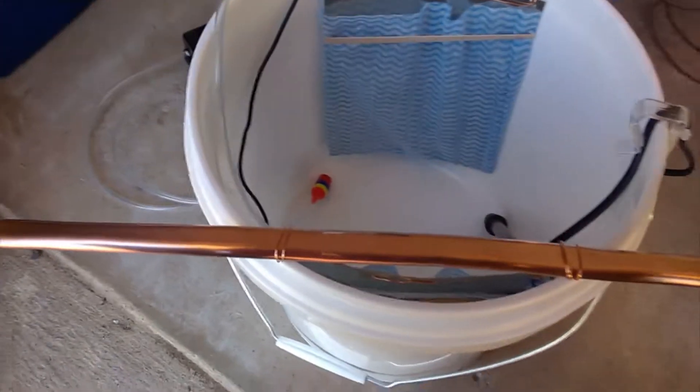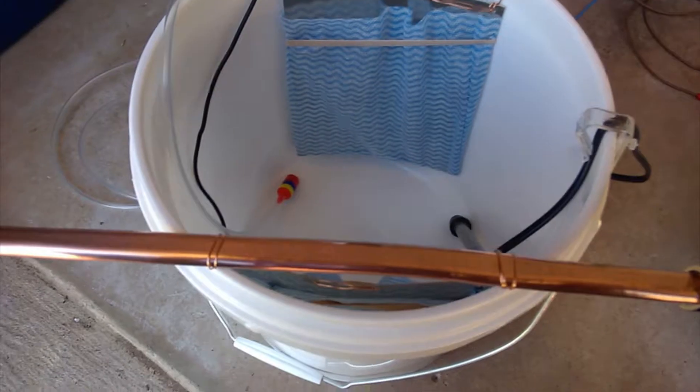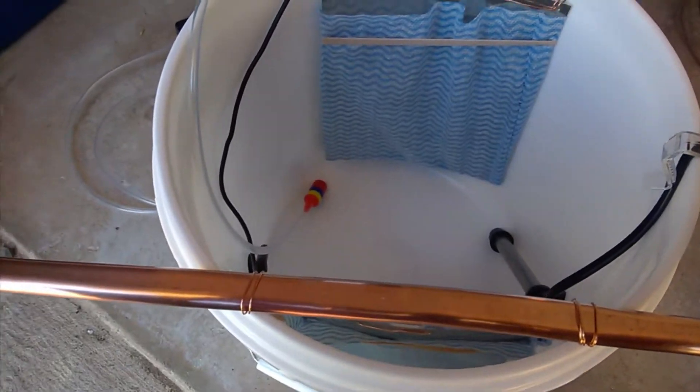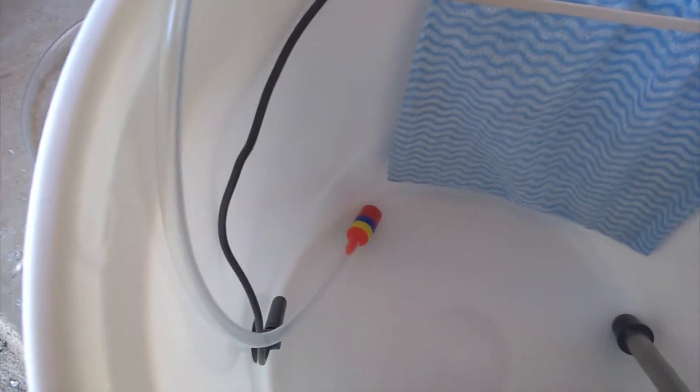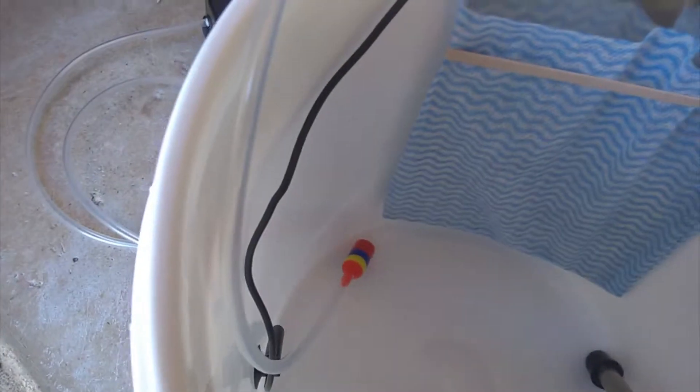Today we're going to do some nickel plating. That's the tank I prepared already. You've got the two nickel anodes, one here and one over there. At the bottom is a little red aerator connected to a fish tank pump.